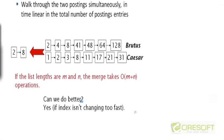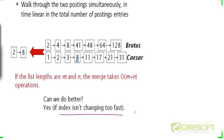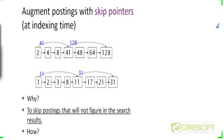Can we do better than linear time? The answer is yes, provided that the index isn't changing too fast — that is, provided that there aren't new entries being added or deleted from the postings lists. What we can do is take the postings lists from chapter one and augment them with something called skip pointers.